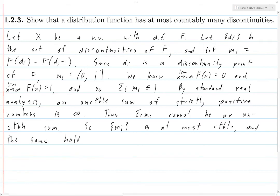And the same holds for the collection of di's, because there's a one-to-one correspondence between the di's and the mi's. And so to say that the collection of di's is at most countable means that the distribution function has at most countably many discontinuities. And that's exactly what we wanted to prove. And so now we're done.